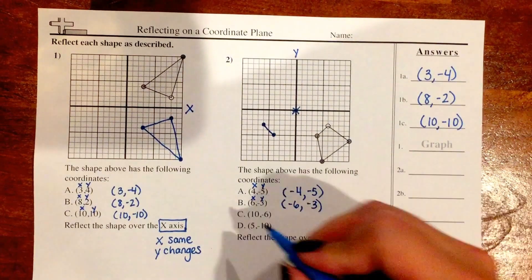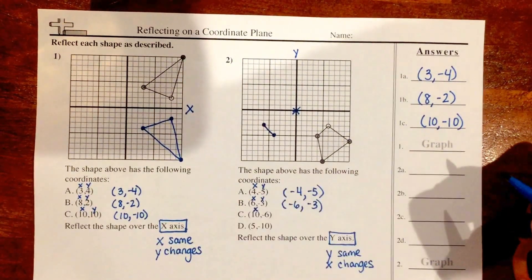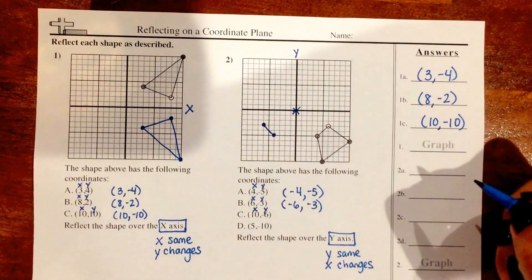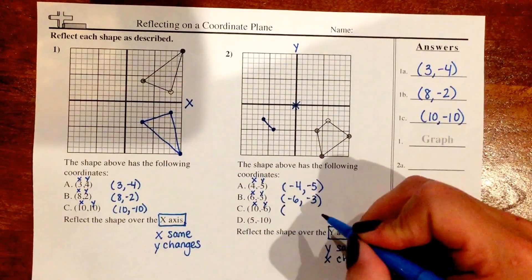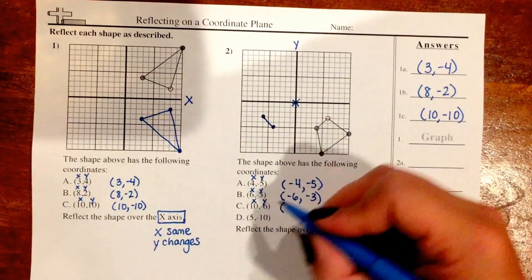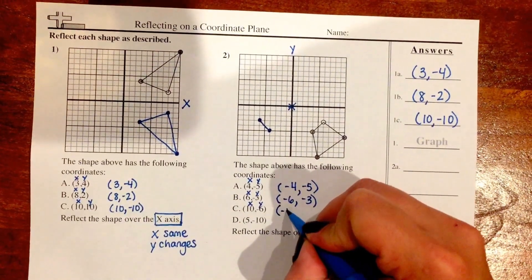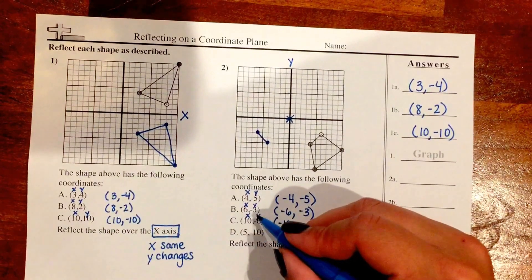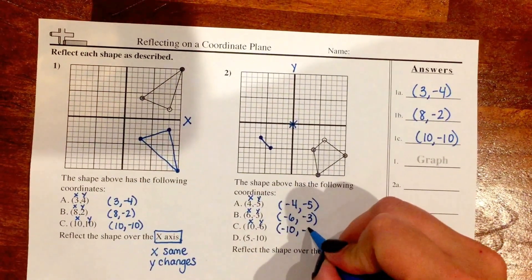Point C has 10 as my x-coordinate and -6 as my y-coordinate. So again my x is the one that changes, so it's going to change from a positive 10 to a negative 10. And my -6, because it's my y-coordinate, is going to stay exactly the same.